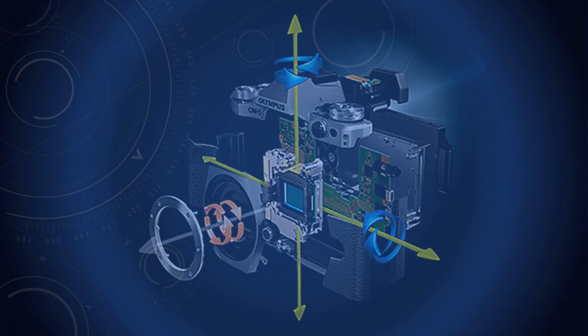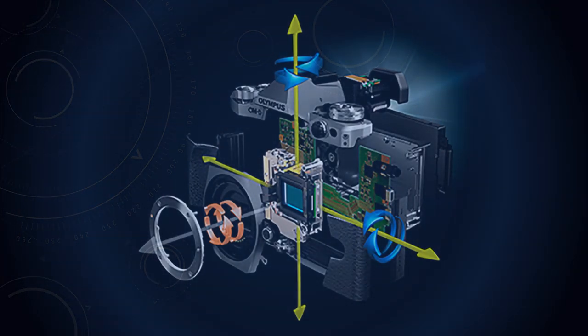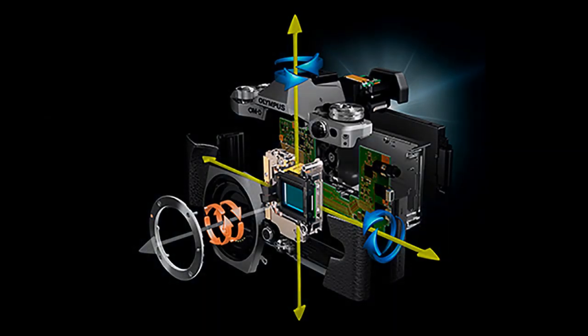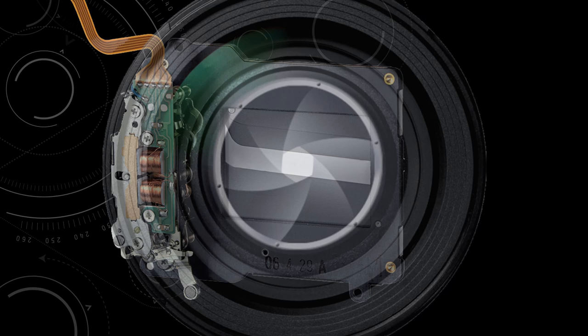Where confusion occurs with Micro Four Thirds is sensor size. It is smaller than many other formats, but not as small as those found in most smartphones. The smaller the sensor, the greater the depth of field and overall sharpness. My personal technical guru informs me that it is really down to the size of pixels that have to be accommodated in a smaller area.